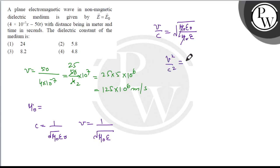Therefore, epsilon upon epsilon not equals c upon v whole square, that is 3 into 10 to the power 8 divided by 1.25 into 10 to the power 8, the whole square.